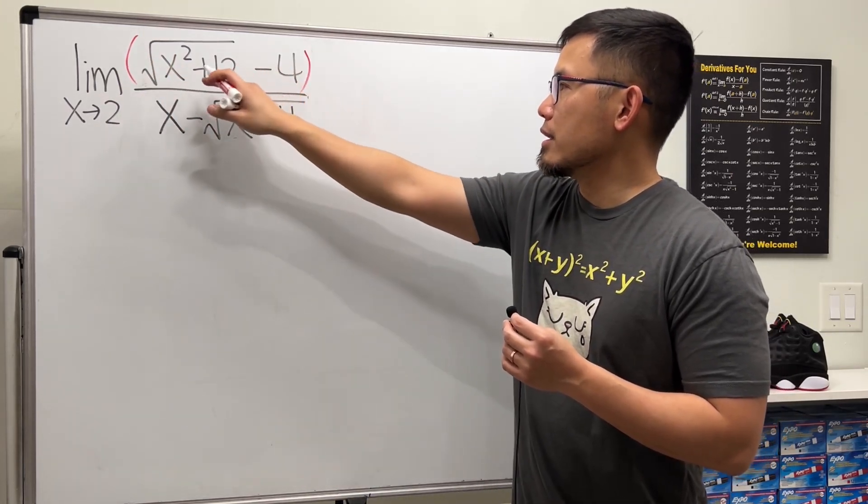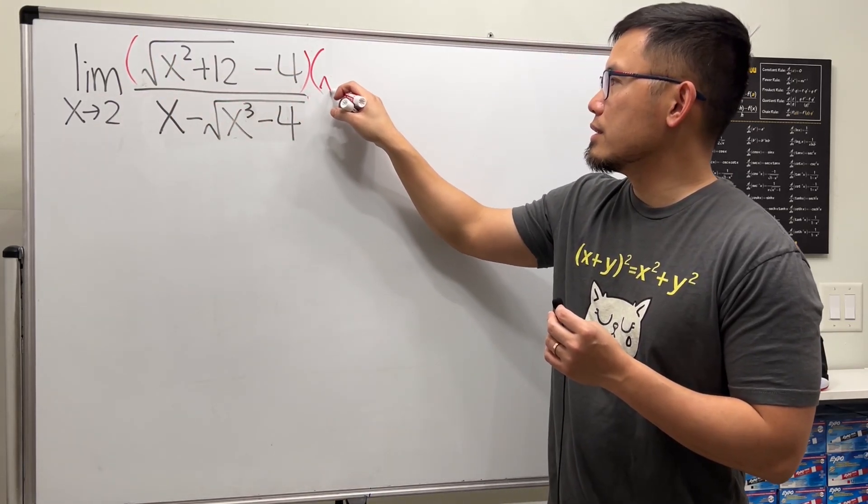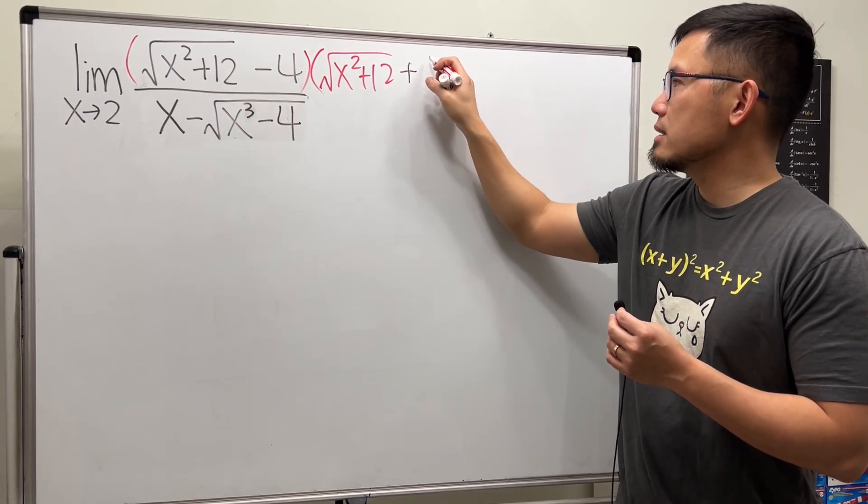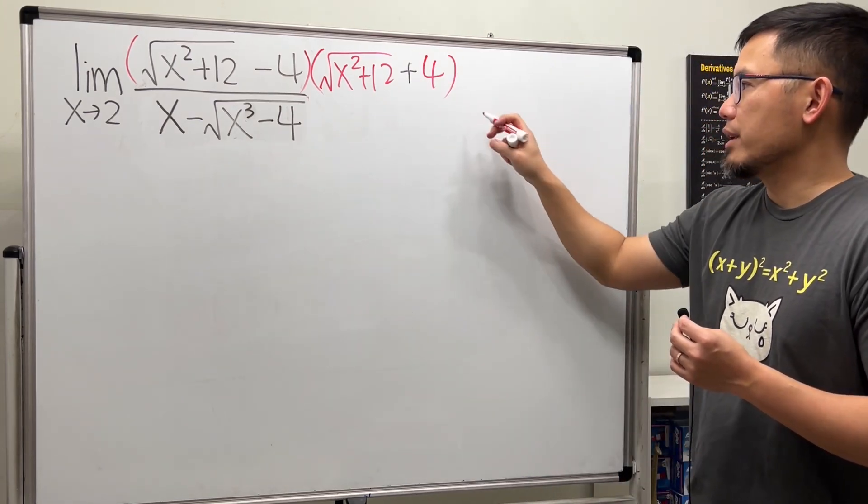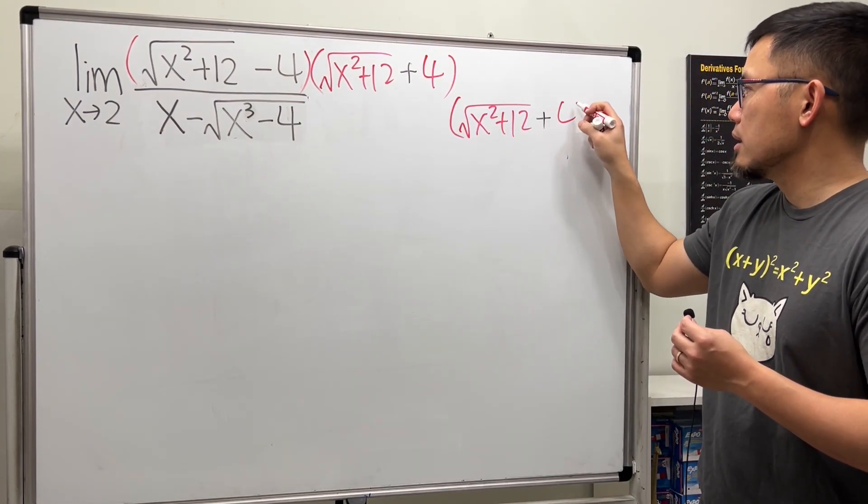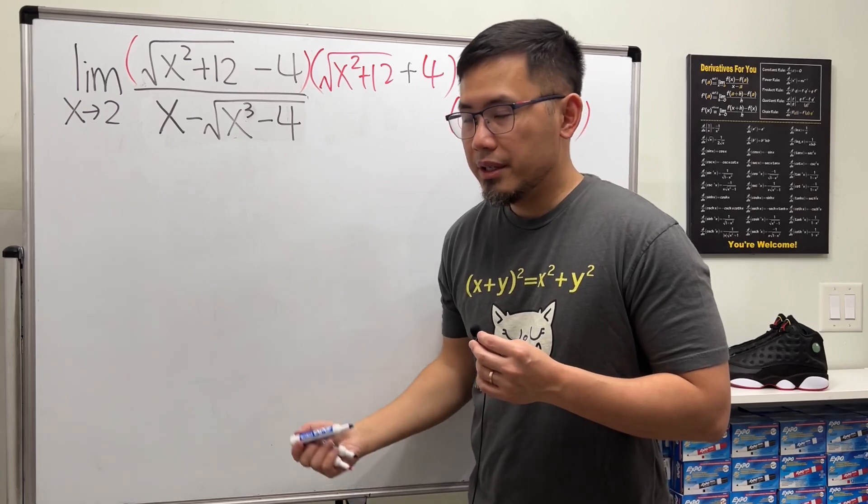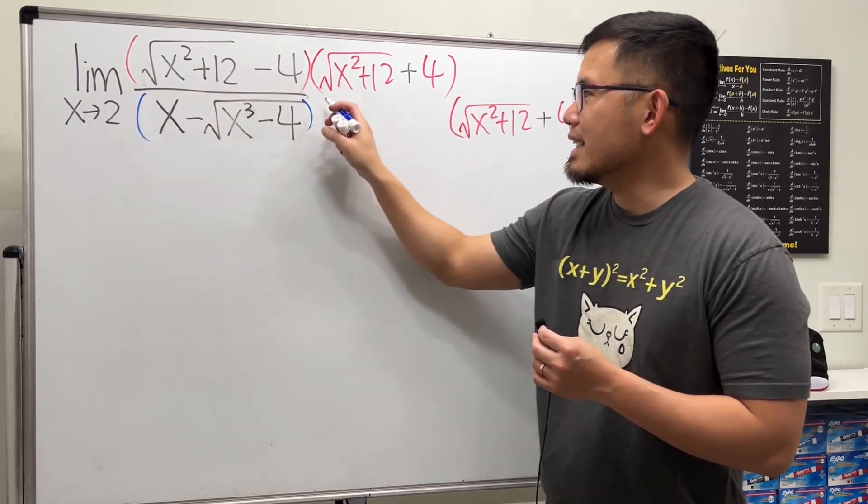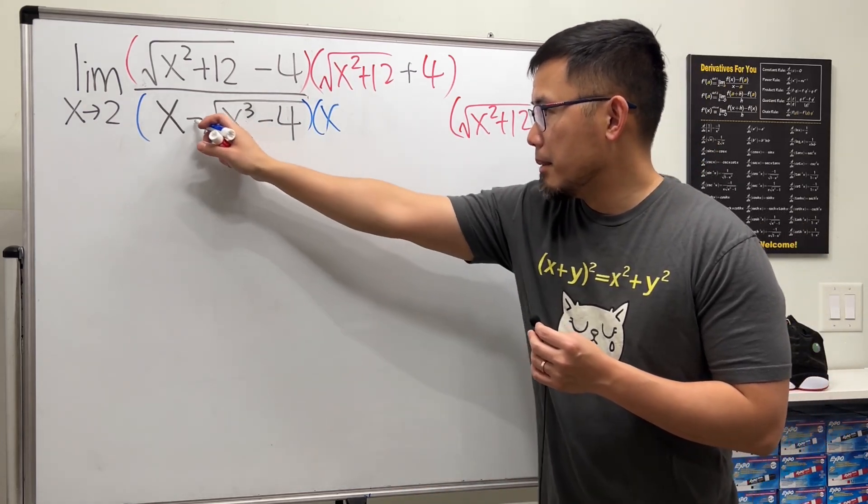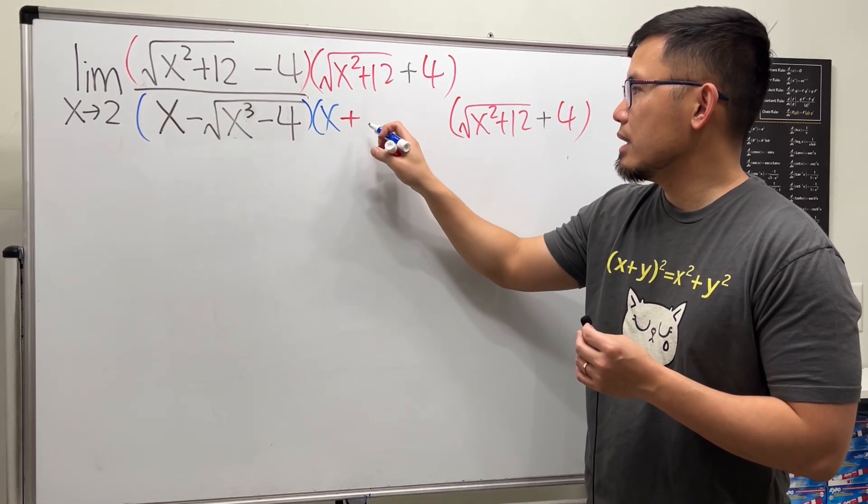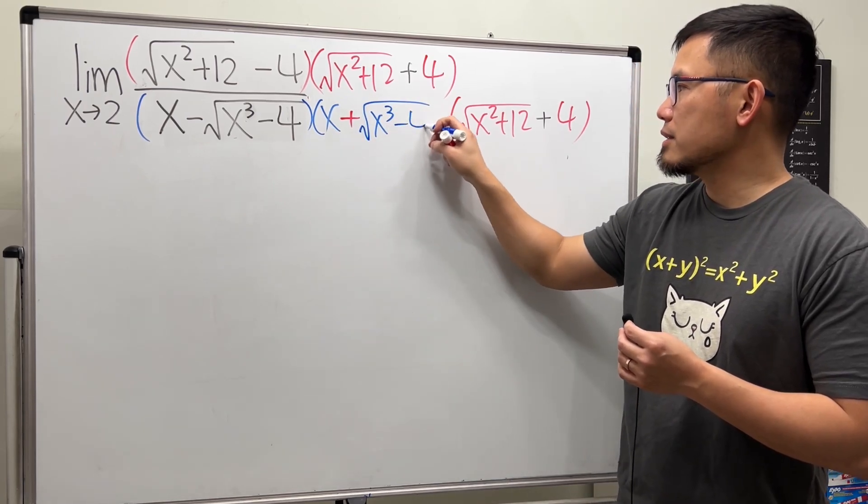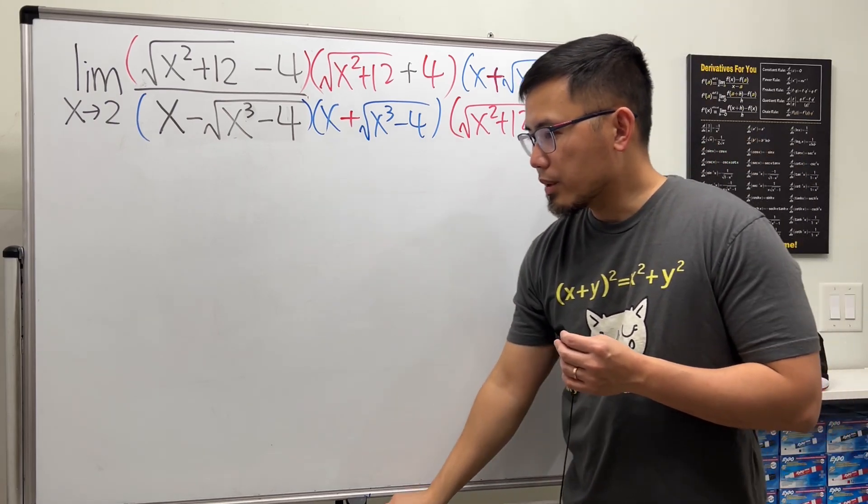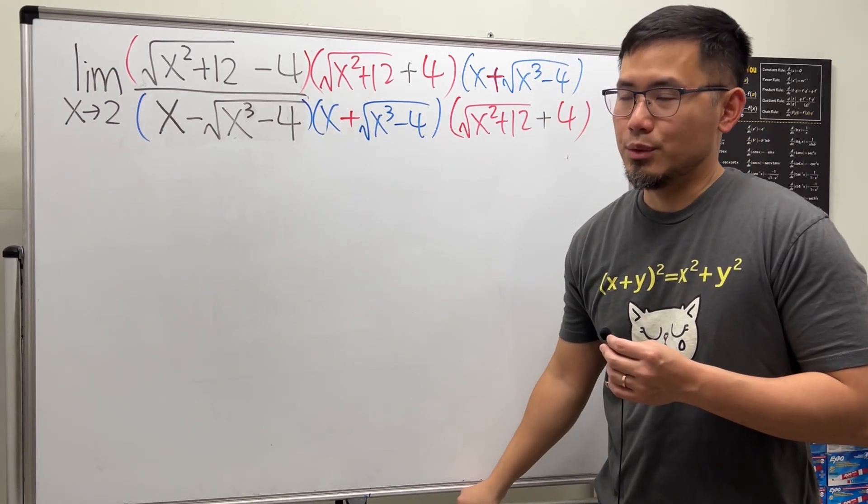I'm going to multiply out the top by its conjugate right here, which is the square root of x squared plus 12, and change the minus to a plus. And then I'm also going to divide it by its conjugate. Let me also multiply the bottom's conjugate, which is keep that and then change the minus to a plus, square root x to the third power minus 4. And also do the same thing on the top. And then we are going to just multiply this and that and this and that and see what happens.